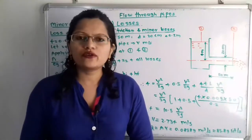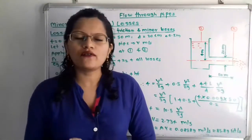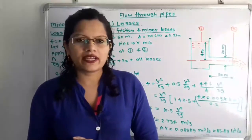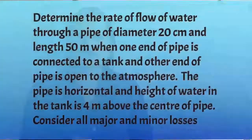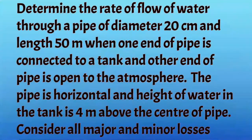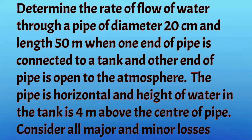In this video, we are going to find out the rate of flow through a pipe connected to a tank. Determine the rate of flow of water through a pipe of diameter 20 cm and length 50 m, when one end of the pipe is connected to a tank and the other end is open to atmosphere. The pipe is horizontal and the height of water in the tank is 4 m above the center of the pipe. Consider all major and minor losses.